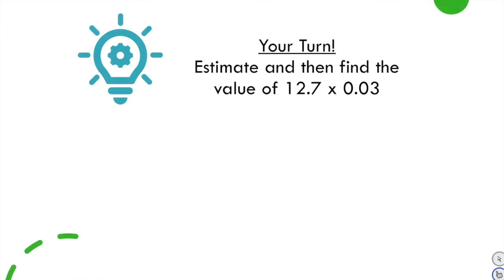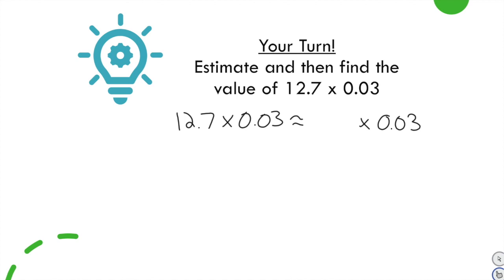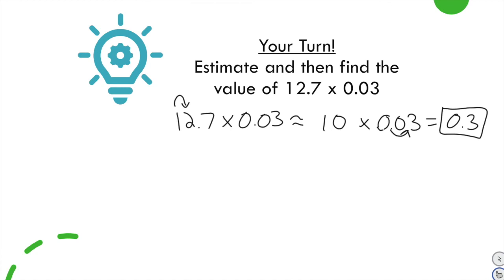Two more practice problems. Estimate 12 and 7 tenths times 3 hundredths. The second factor, 3 hundredths, stays the same — one non-zero digit. We round 12 and 7 tenths to the greatest place value, giving 10. When we multiply 3 hundredths times 10, the decimal moves one place to the right, making it 10 times bigger, giving 3 tenths. That is the estimated answer.